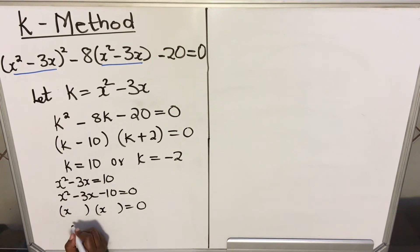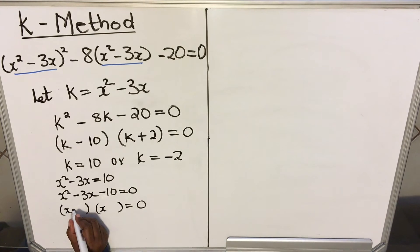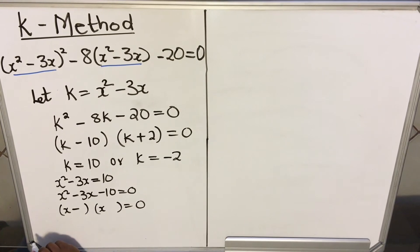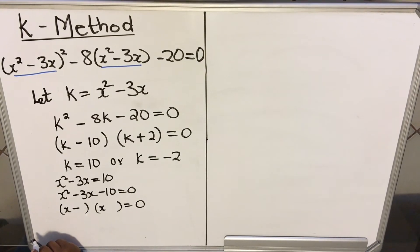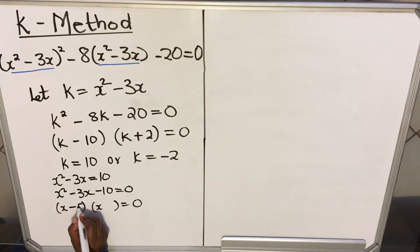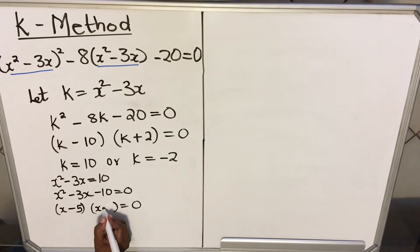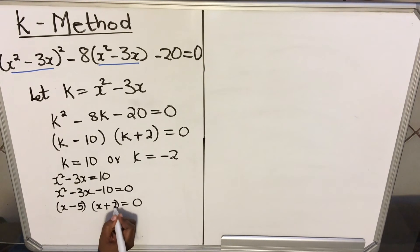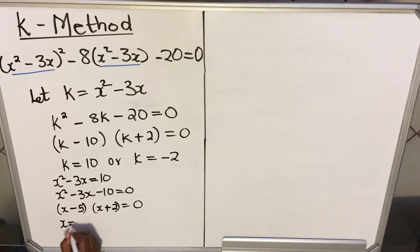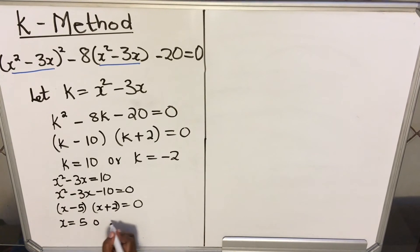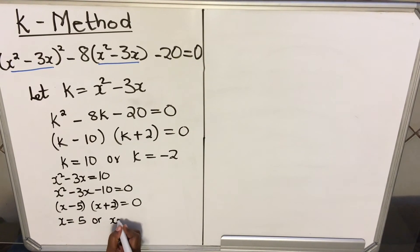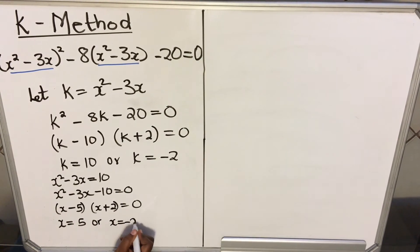Factorizing x squared minus 3x minus 10: that gives factors with 10 times 5 and plus 2, so x equals 5 or x equals minus 2.